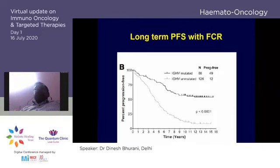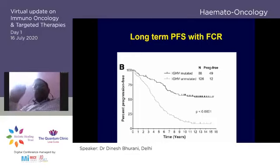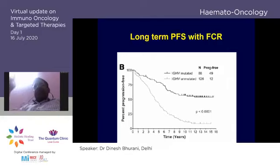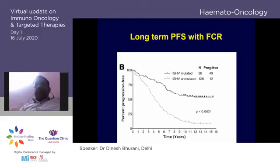Who is FCR-eligible? Western guidelines say up to 65–70, but considering patients in India who are younger — even those in their 30s and 40s — I think below age 55 with IGHV mutation, patients must be treated with FCR. This is because approximately 50% of IGHV-mutated patients show a flattened survival curve at 15 years — suggesting possible cure with FCR. My opinion: below 55, or extending to 60 in our scenario, IGHV-mutated patients should be treated with FCR.